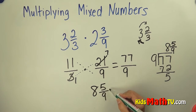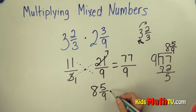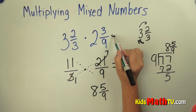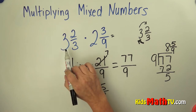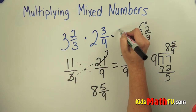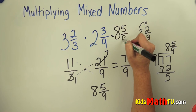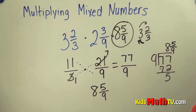I check: can I reduce or simplify 5 ninths? Is there a number that will divide both 5 and 9 evenly? There is not. So the answer to 3 and 2 thirds times 2 and 3 ninths equals 8 and 5 ninths. That's the end of our lesson on multiplying mixed numbers.